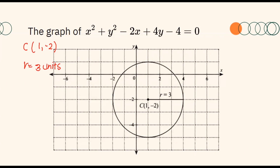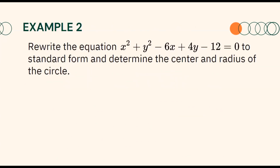The center of our circle is at (1, negative 2) and the radius is equal to 3 units. Looking at this graph, notice that the radius is 3 units and the center is in the fourth quadrant. Let us have another example: rewrite the equation x squared plus y squared minus 6x plus 4y minus 12 equals 0 to standard form and determine the center and radius of the circle.